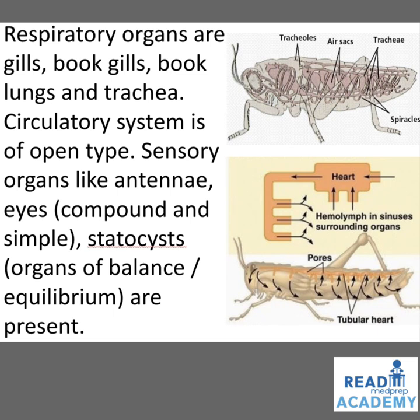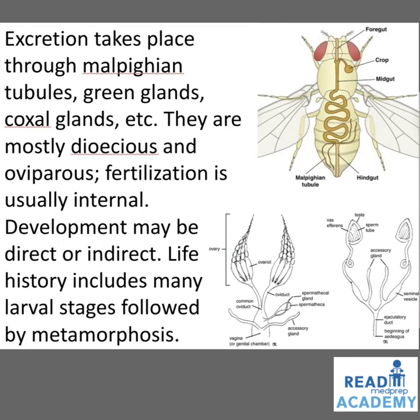In the image you can see the tracheals of the cockroach: the air sacs, the trachea, and the spiracles. In the below image, you can see blood circulation where the heart pumps blood into the haemolymph in sinuses surrounding the organs; also visible are the tubular hearts and multiple pores. Excretion takes place through Malpighian tubules, green glands, coxal glands, etc.